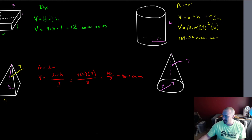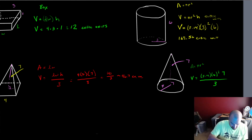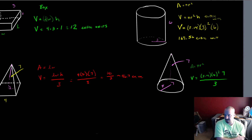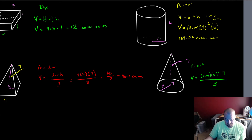Coming over to this cone, it's the same idea — it's going to start off a lot like the cylinder. The area of the base is pi r squared, so the volume is going to be 3.14 times 4 squared times 7, divided by 3 because it comes together. That's 3.14 times 16 times 7 divided by 3, which is roughly 117.23 cubic units.